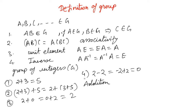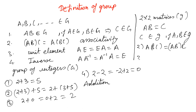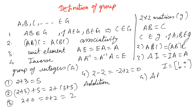Let's take another example: 2×2 matrices forming a group G. If A·B equals C, then C belongs to G whenever A and B belong to G (closure). Matrix multiplication satisfies associativity: (AB)C equals A(BC). The identity element is I, the identity matrix, where A·I equals I·A equals A.